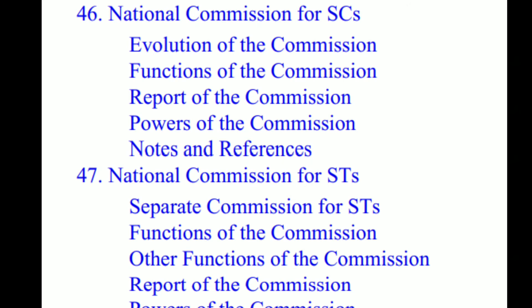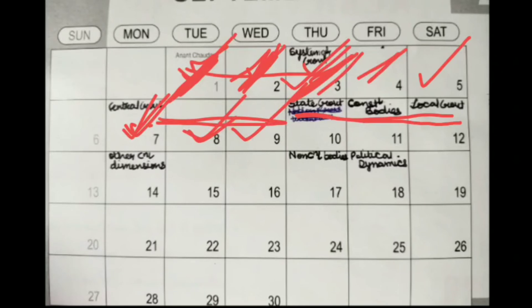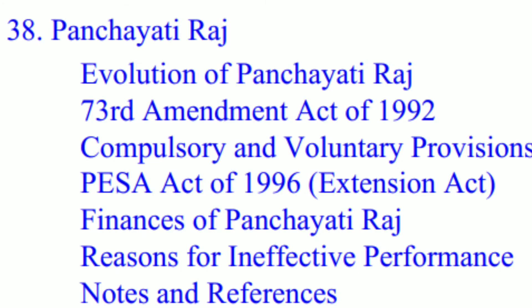Along with State Legislature, I took chapters 46 and 47 — National Commission for Scheduled Castes and National Commission for Scheduled Tribes. This is your day ten, and with it you complete state government, since State Legislature was the only remaining piece.